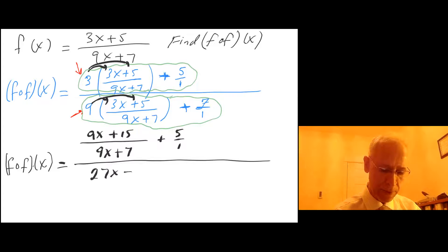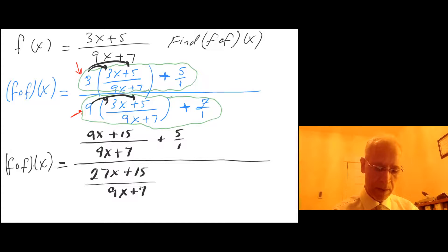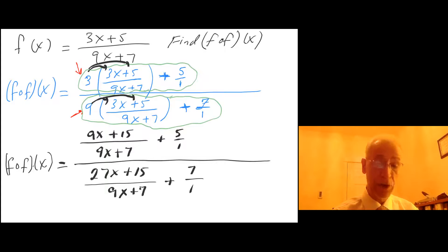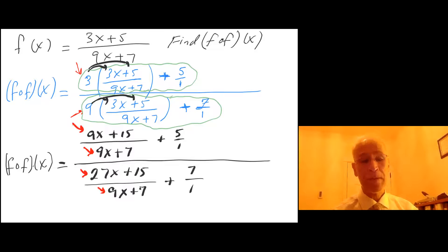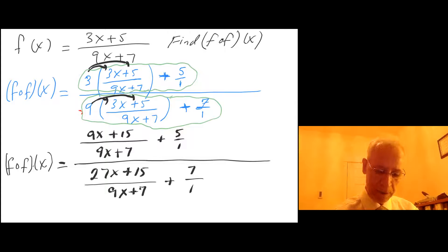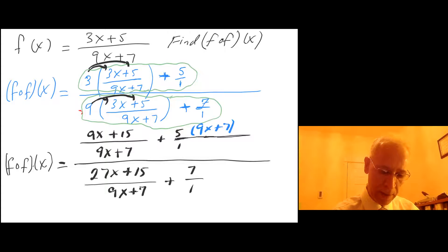And in the denominator I have 27x plus 15 over 9x plus 7, plus 7 over 1. Remember I still cannot simplify the 9 with the 27x because there is a plus — I don't have a product. For the 5 over 1, I'm going to multiply the top and bottom of that fraction by 9x plus 7 over 9x plus 7.